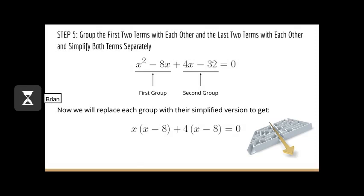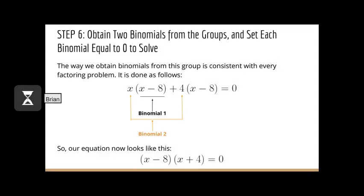Now that we've simplified each group, we replace the first group and the second group with their simplified versions to get x times x minus 8 plus 4 times x minus 8 equals zero. The sixth and final step to factoring is to obtain two binomials from the groups. The first binomial is what's in parentheses: x minus 8. The second binomial is everything out of parentheses: x and positive 4. So our new equation looks like x minus 8 times x plus 4 equals zero.